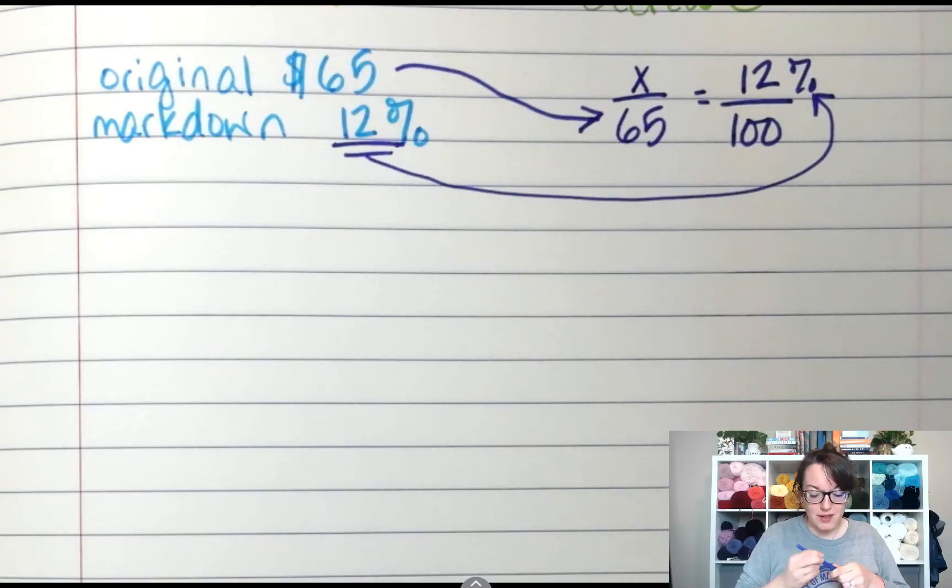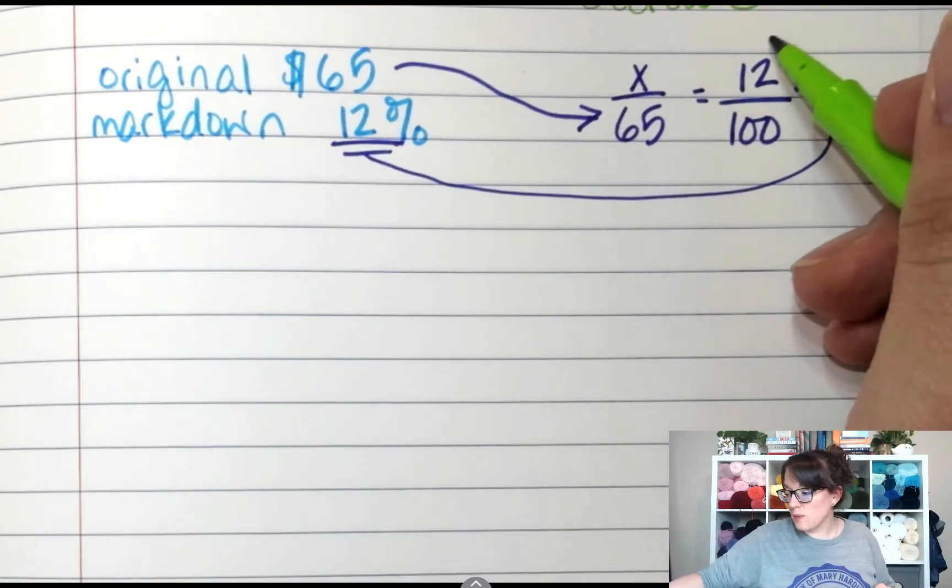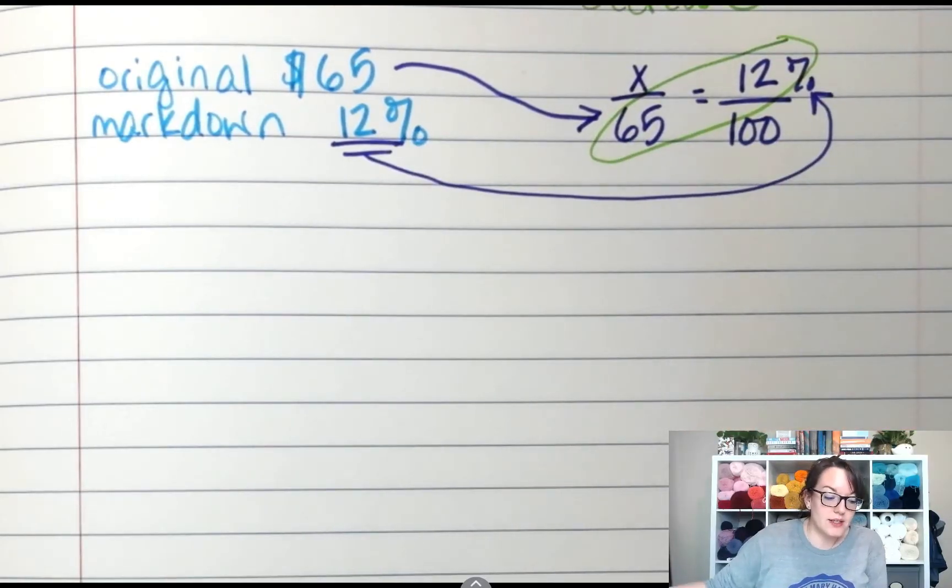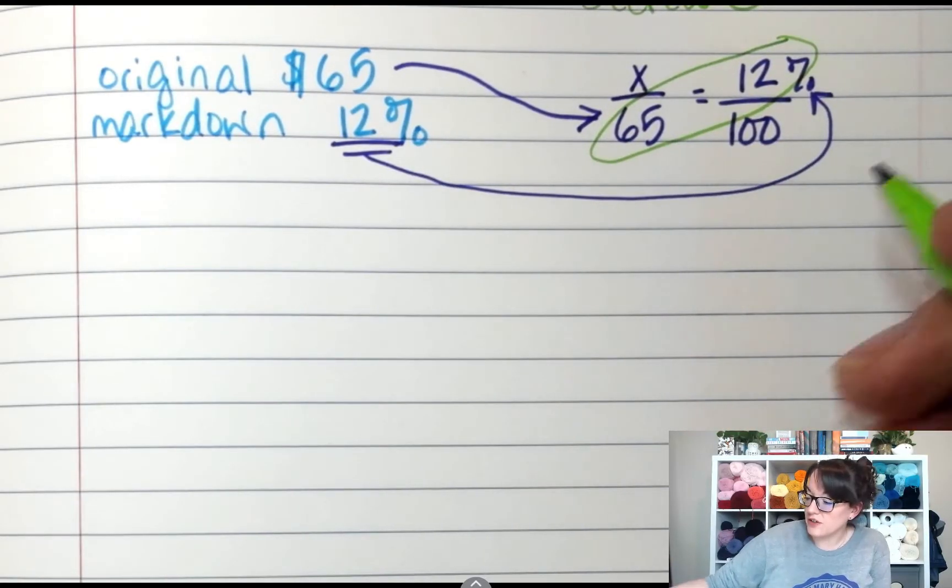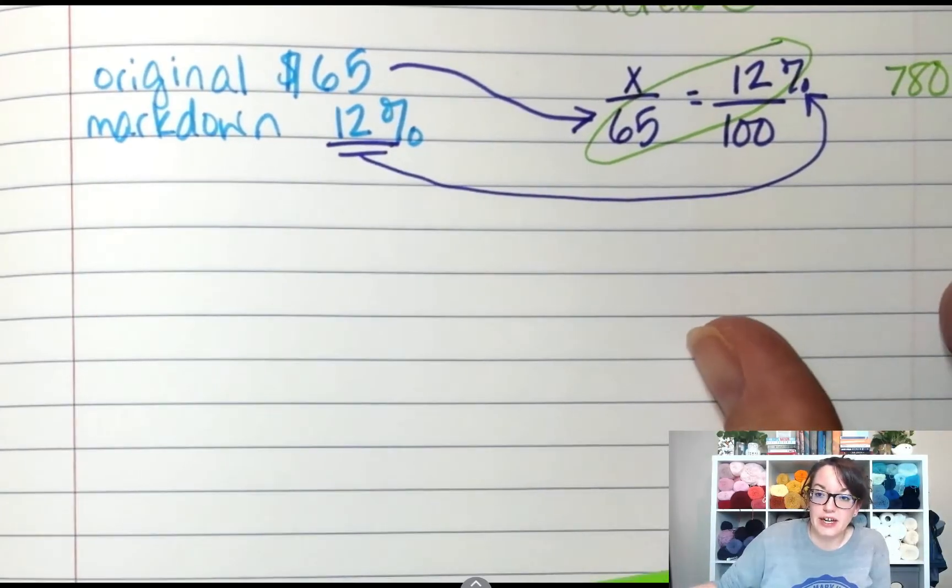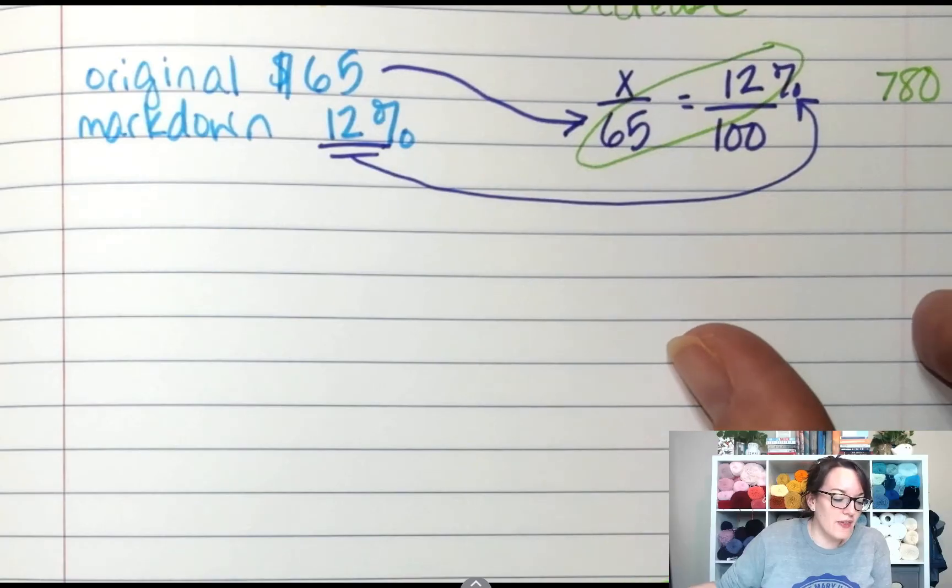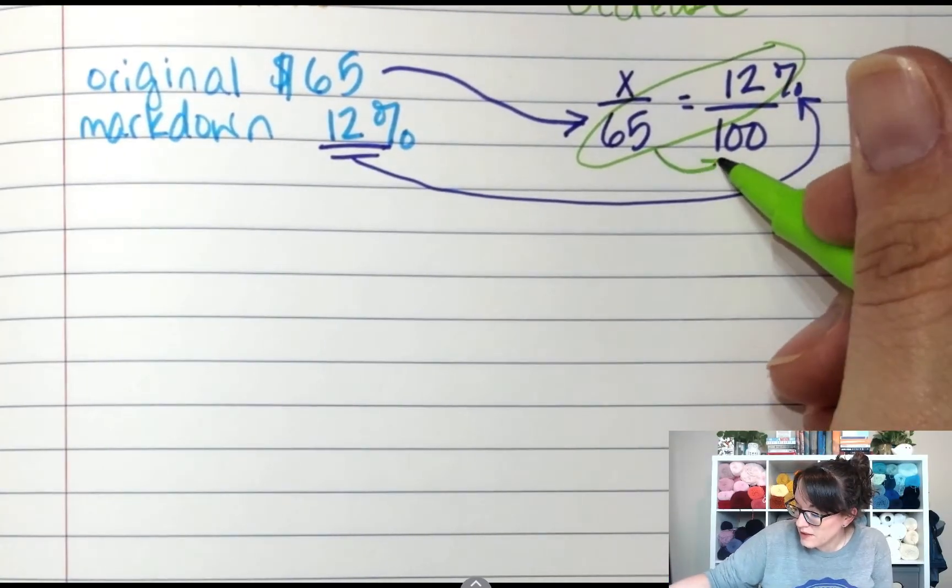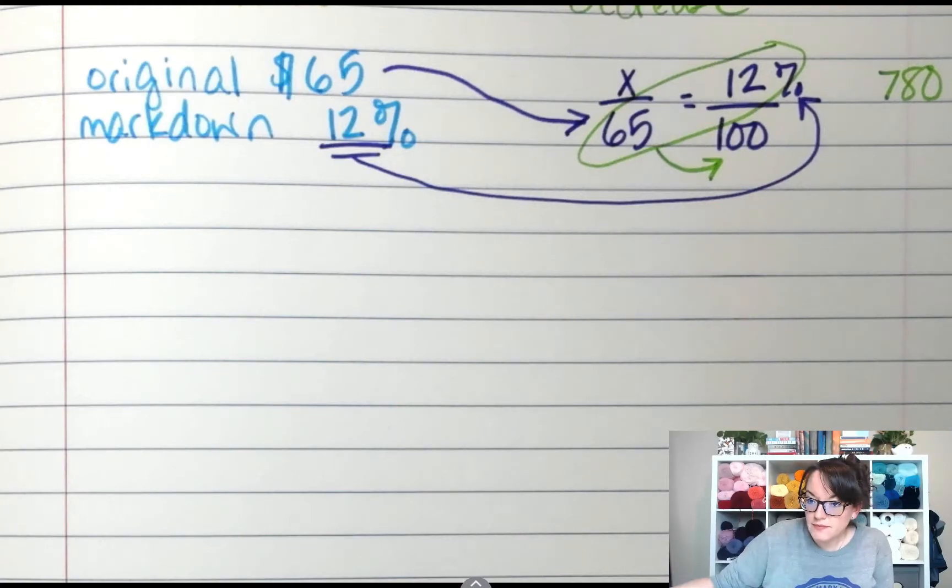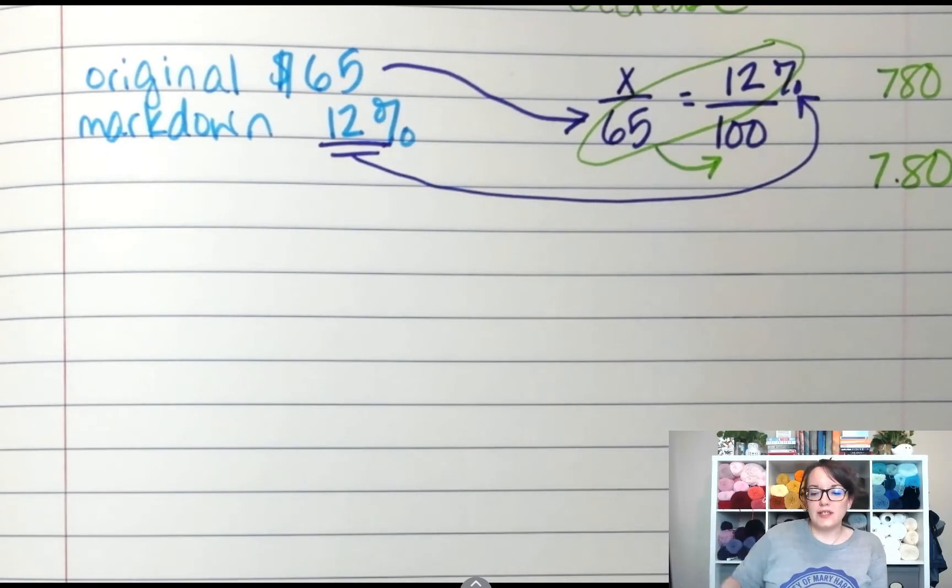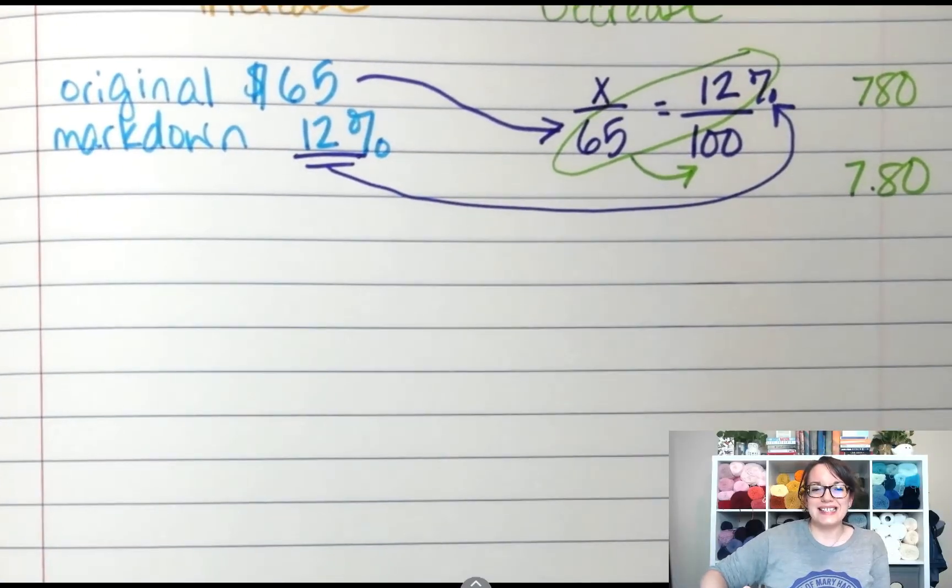Once you have it set up, the math part is kind of easy because it's just a proportion. So we multiply 65 times 12, which is 780. I don't expect you to do this in your head, I just already did it. And then divide by 100. So after you cross multiply, divide by 100, which is 7.80. And now we have to stop and kind of talk about what is 7.80.